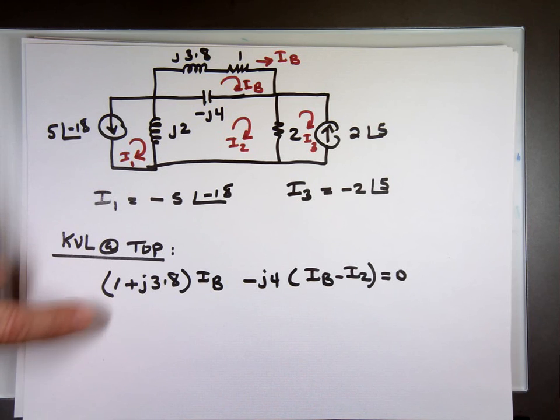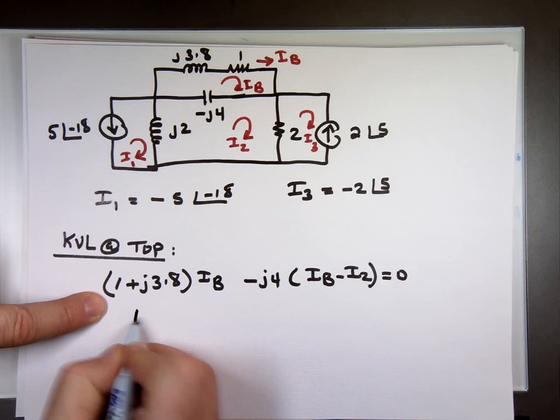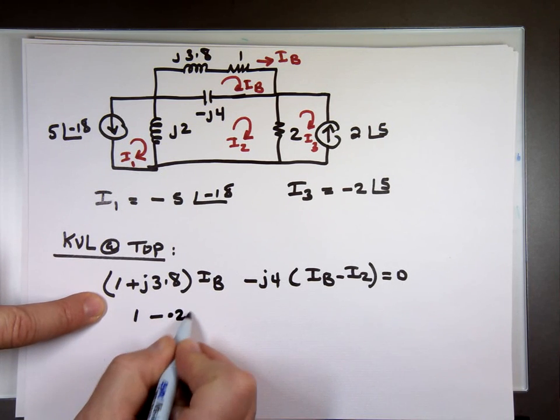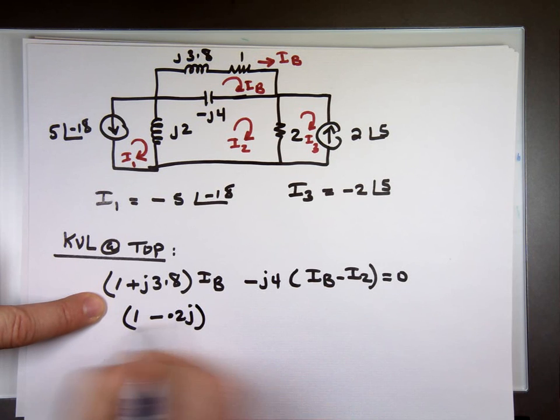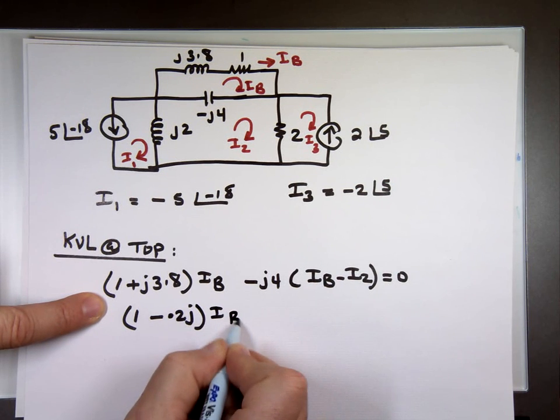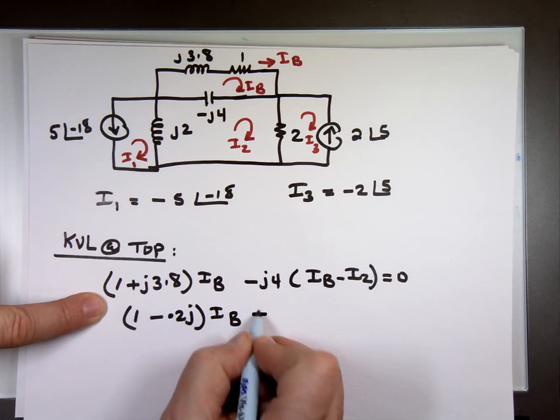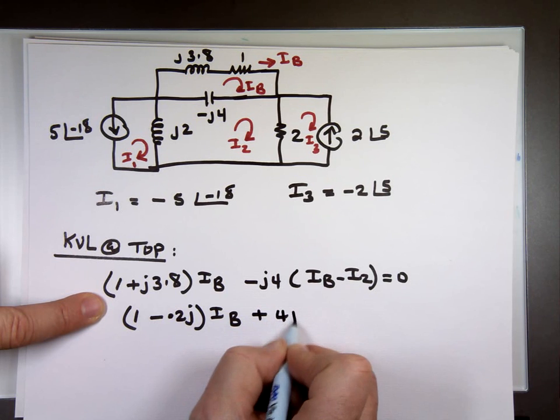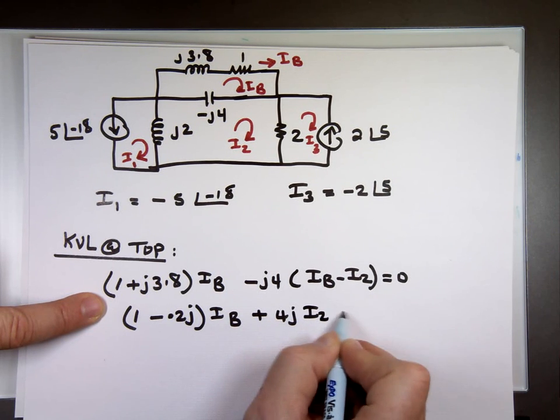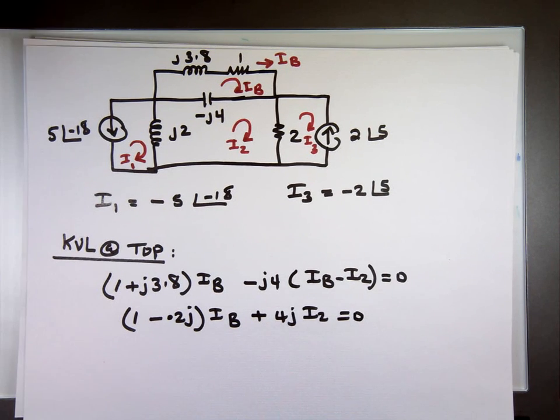Play with the math. I have (1 minus 0.2J) I sub B plus 4J I sub 2 equals zero. That's my first equation.